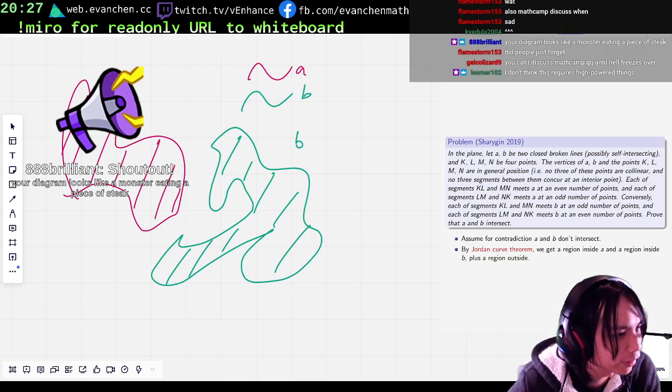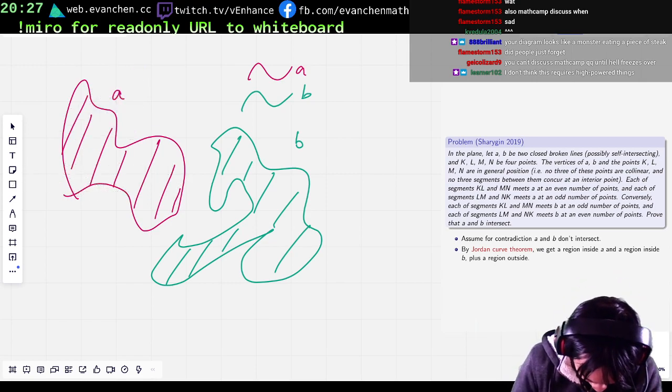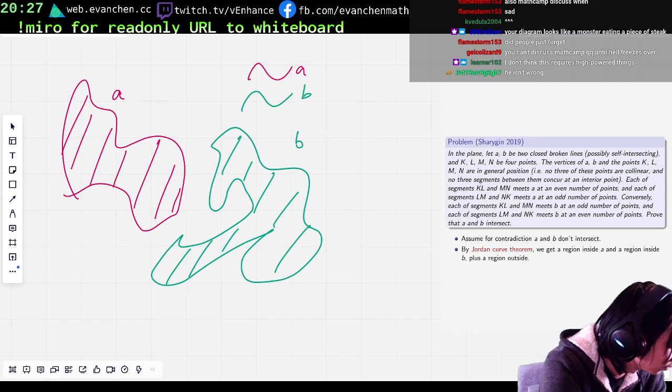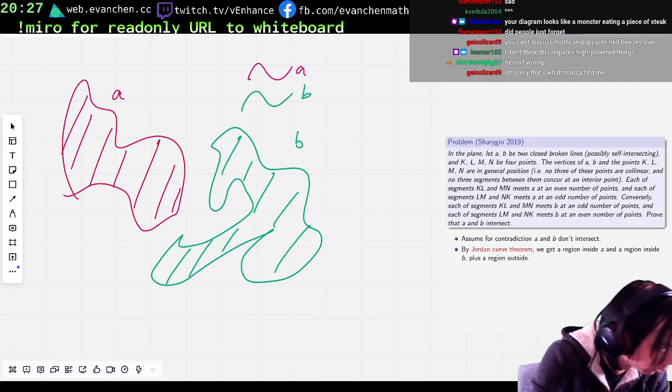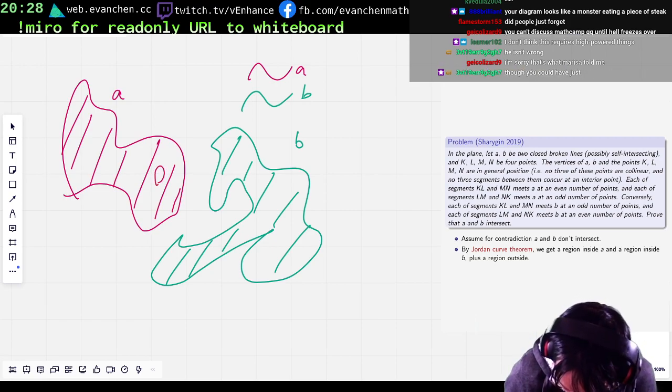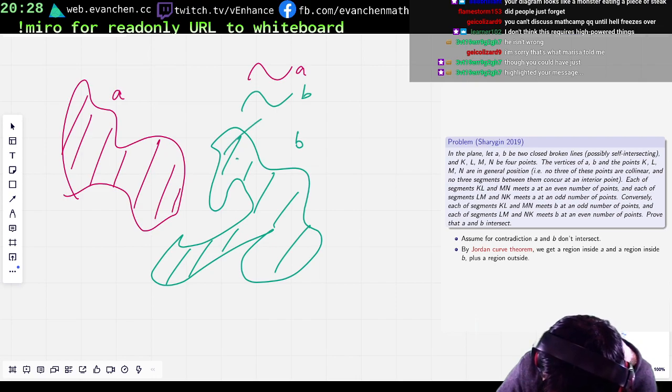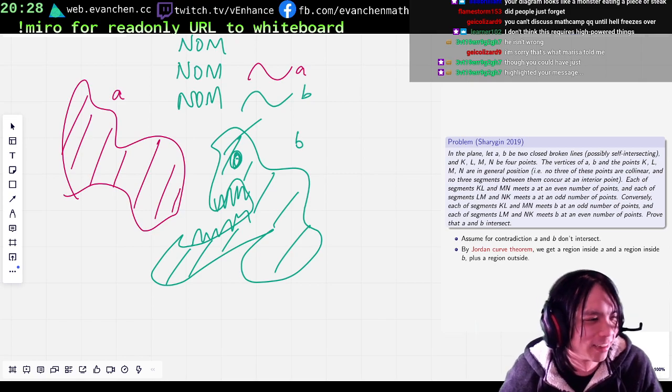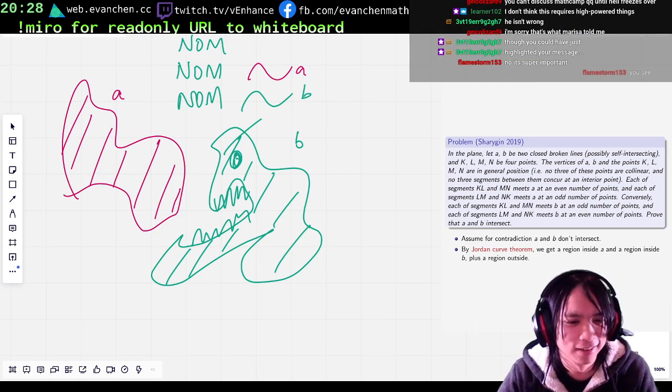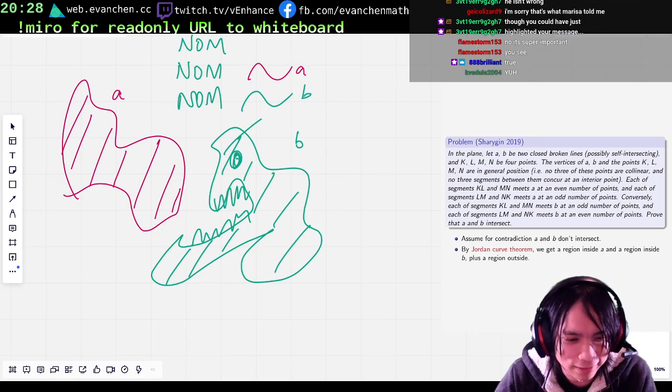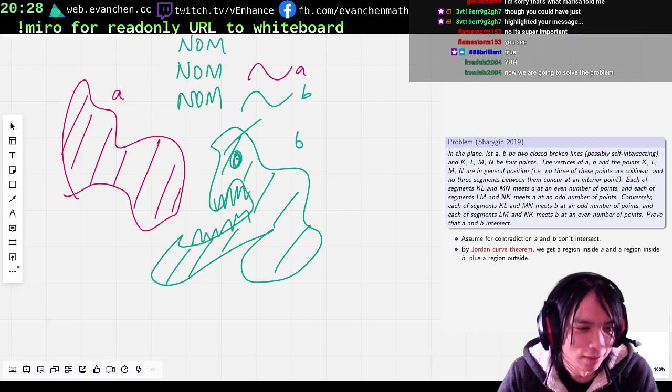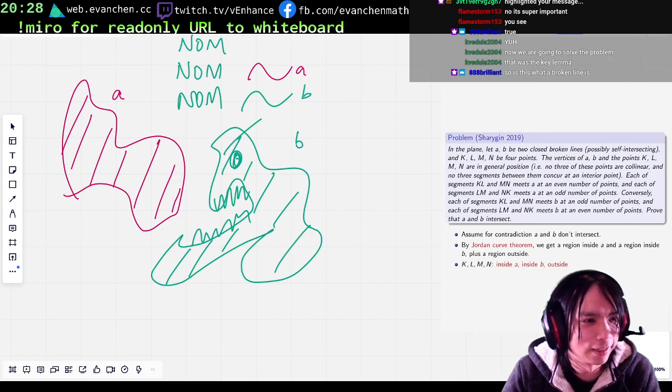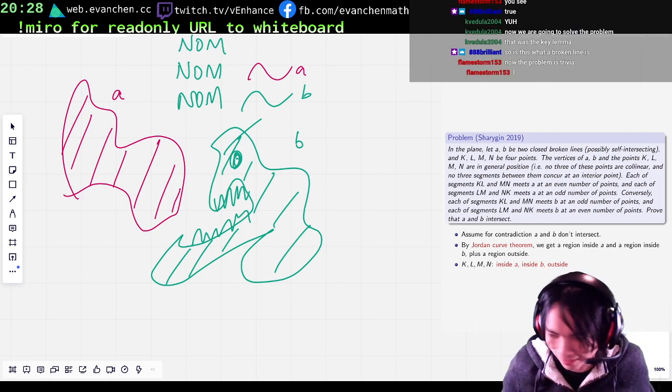Shout out to your diagram looks like a monster eating a piece of steak. I don't know from... Who was that from? Um... From... 88 Brilliant. Uh... Yeah, I agree. Um... Okay. Okay, so anyways, I feel like... KLMN are either... Inside A... Inside B... Or outside. And... The odd even conditions... Prevent... Tell you, like... Something. Okay, this is really confusing.